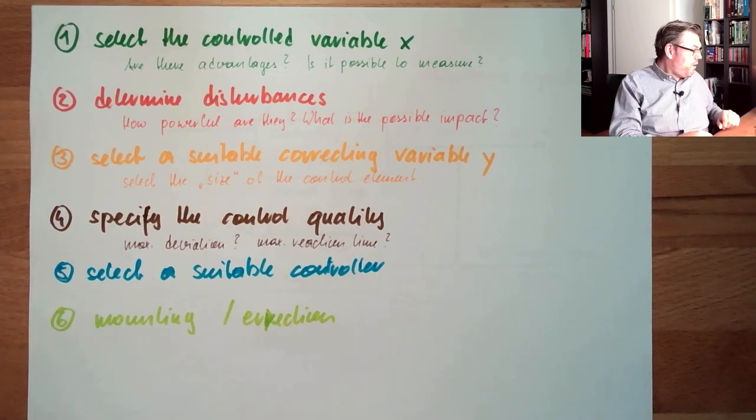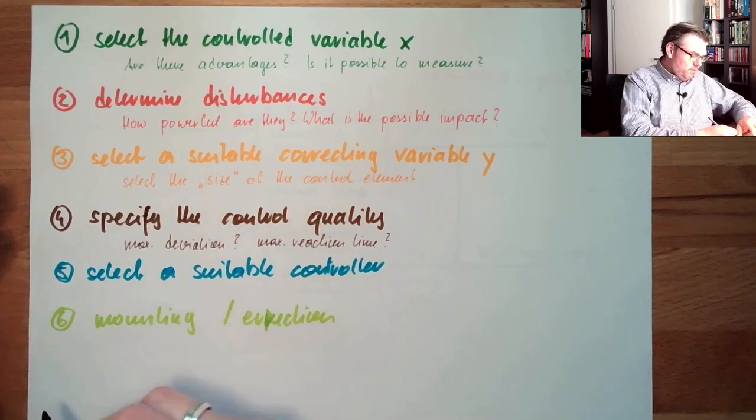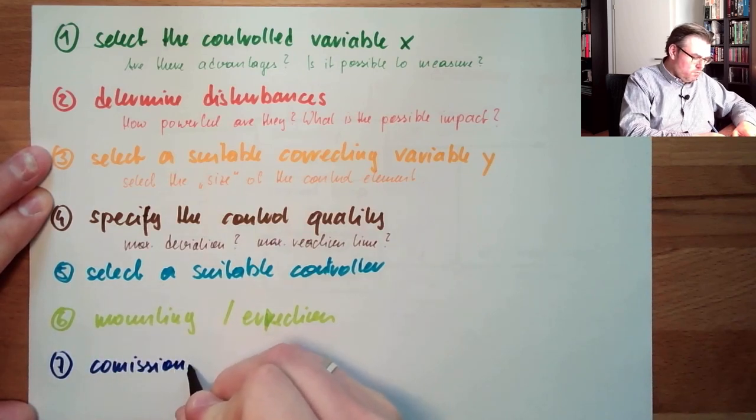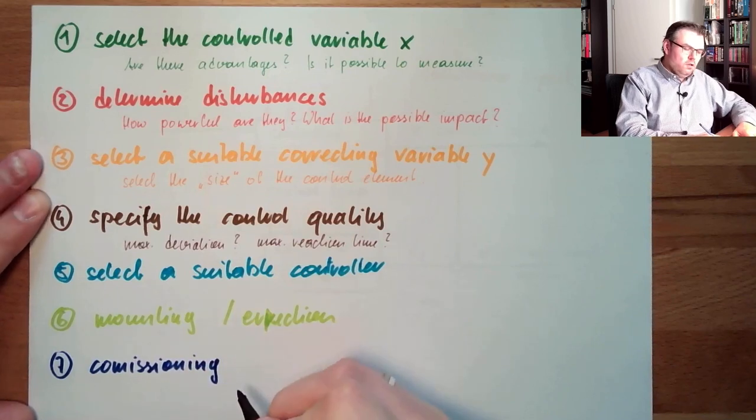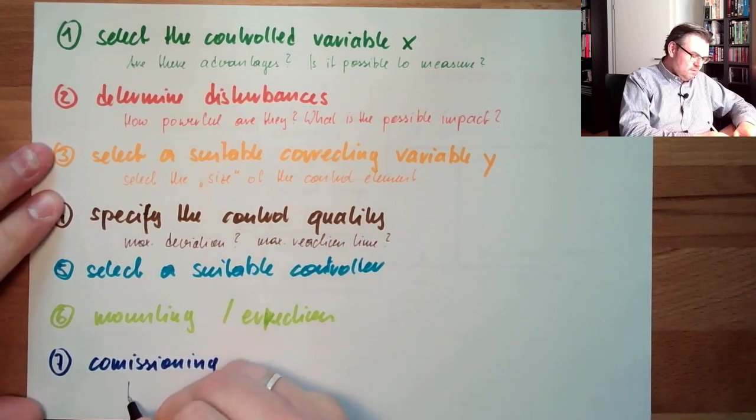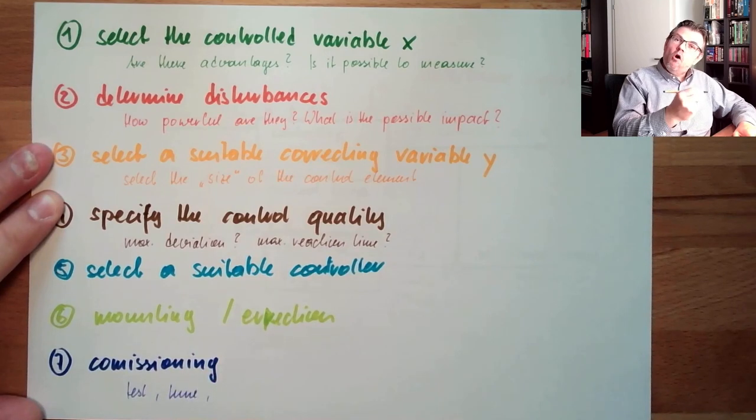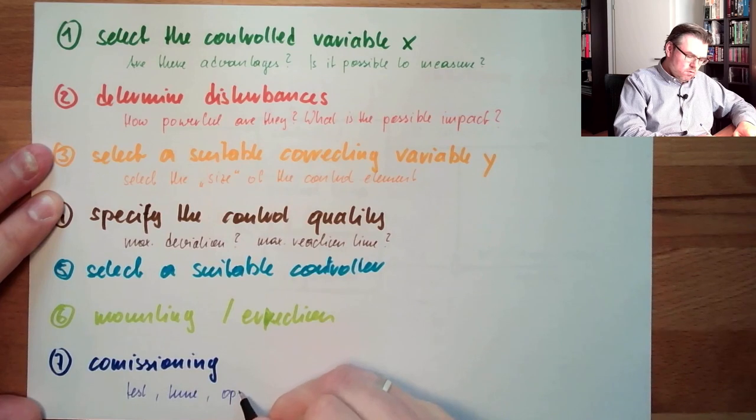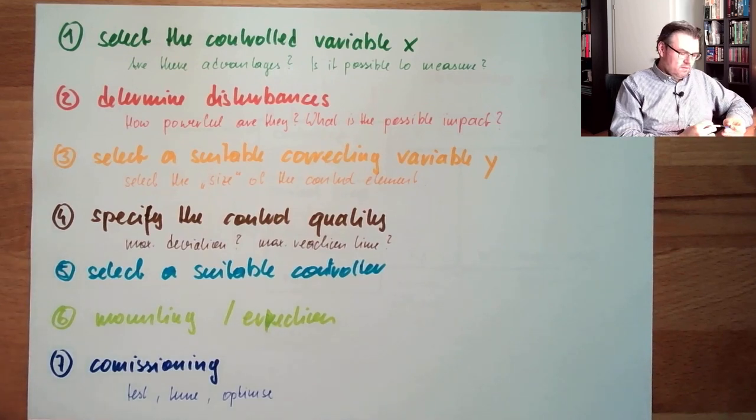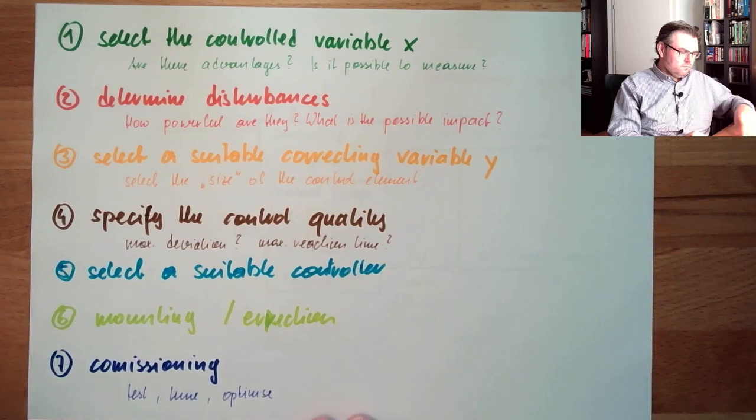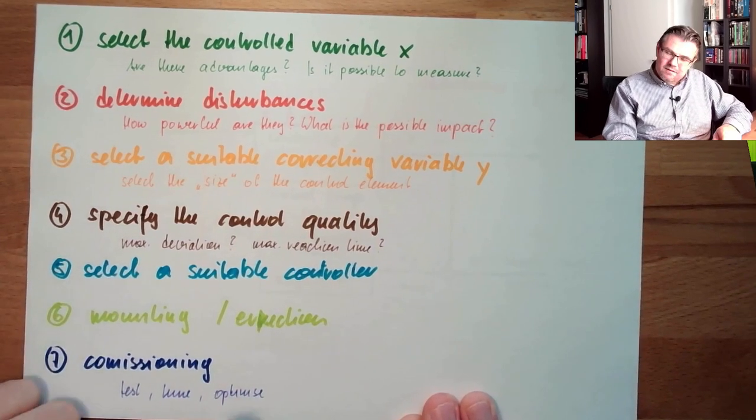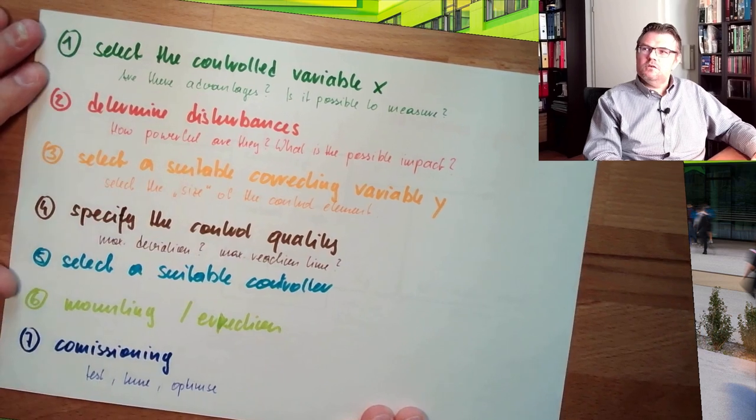And then we try it. Then we try it. So last but not least, seven: commissioning. Turn it on and see how it works. So in commissioning, we usually test it. We tune and we optimize. We optimize the controller. These are the things and then we're done. Then it's working. And if we have done everything correct, it's working pretty well in the most cases.